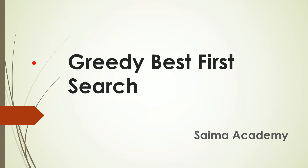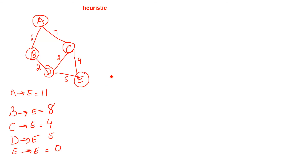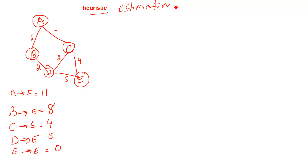In this lesson, I will explain greedy best-first search in artificial intelligence and how it works. It comes under the informed search technique and we will use a heuristic approach here. The meaning of heuristic approach is estimation.